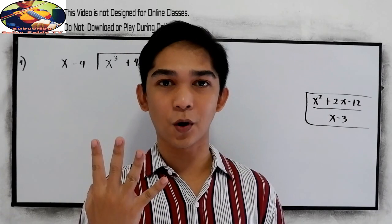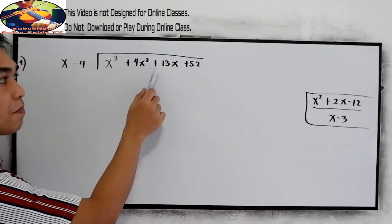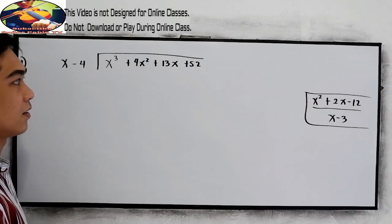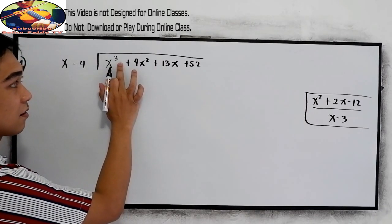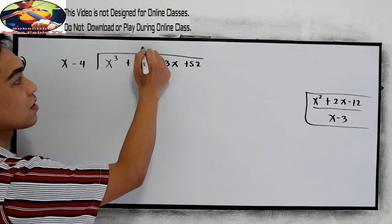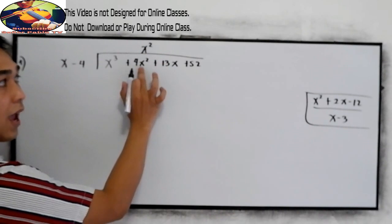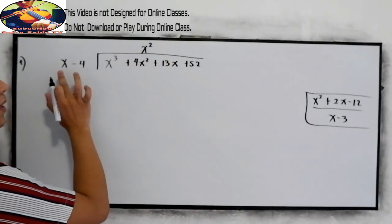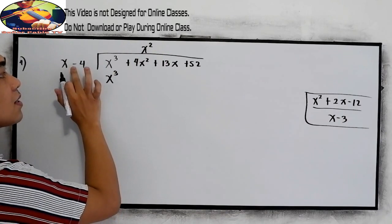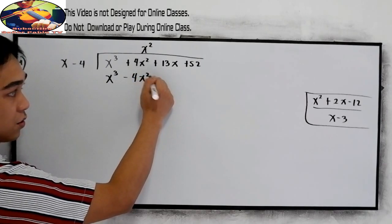Now let's have our fourth example. We have x cubed plus 4x squared plus 13x plus 52, divided by x minus 4. First step: the leading coefficient — x cubed divided by x, that is x squared. Align it in our dividend with x squared. Next, x squared times x is x cubed, and x squared times negative 4 is negative 4x squared.